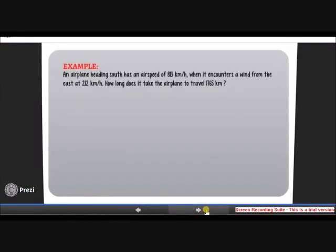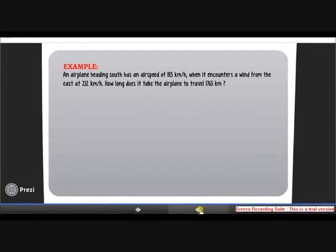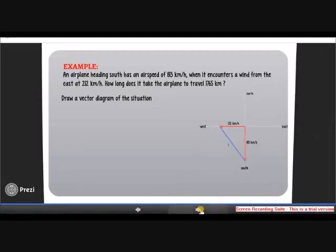In this next example, an airplane heading south has an airspeed of 813 km per hour and encounters a wind from east at 212 km per hour. We're asked to find how long it takes for the airplane to travel 1765 km. We'll start by drawing a vector diagram. The two red arrows indicate the wind and the airplane speed. We have to find the resultant speed, which is the blue line.